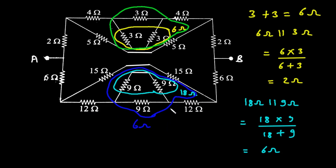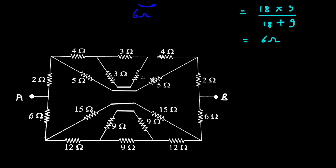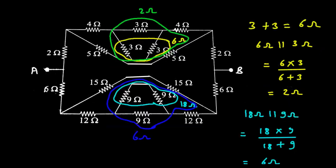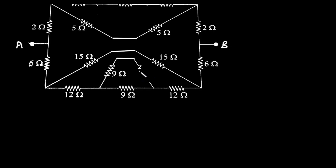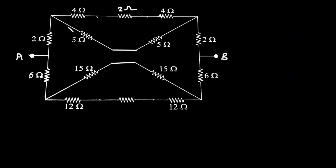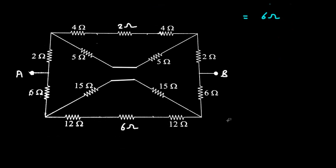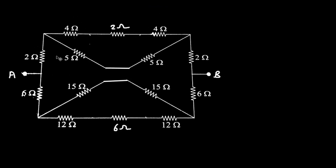This whole section becomes simply 6 ohm. Now here also this 12 ohm, 6 ohm and 12 ohm are connected in series. The resistance value becomes 2 ohm, and similarly we can replace the 9-ohm section by 6 ohm. Now this 5 ohm and 5 ohm are connected in series, so it will be simply 5 plus 5 equals 10 ohm.